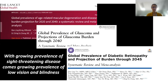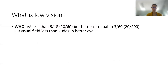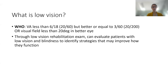Taken together, macular degeneration, glaucoma, diabetic retinopathy, and other age-related eye diseases causing vision loss are going to be growing in prevalence in coming years. This will increase the demand for low vision services, as more people will have vision loss. The World Health Organization defines low vision as a visual acuity worse than 6/18 but better than 3/60, with vision worse than 3/60 being considered blind, or a visual field of less than 20 degrees in the better eye. Low vision rehabilitation exams allow us to evaluate these patients and identify strategies that can help improve their function.